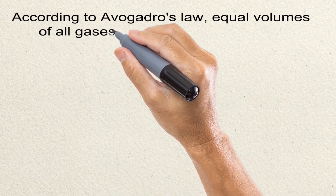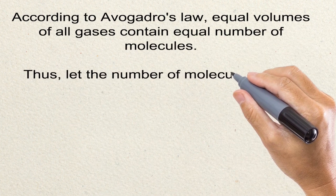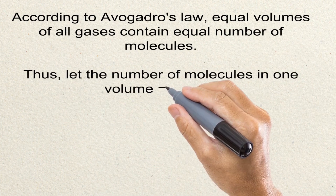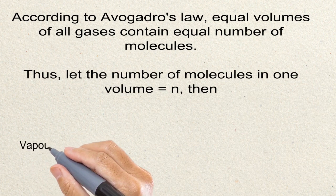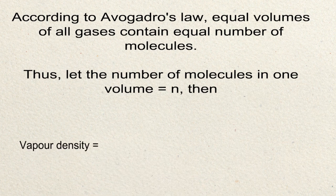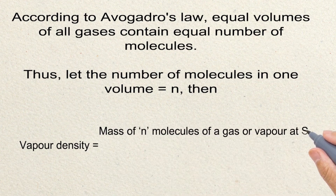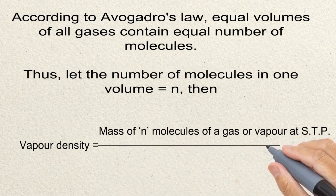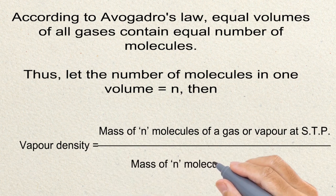According to Avogadro's law, equal volumes of gases contain the same number of molecules, so N is the same. Therefore, vapour density is equal to the mass of N molecules of gas or vapour divided by the mass of N molecules of hydrogen.